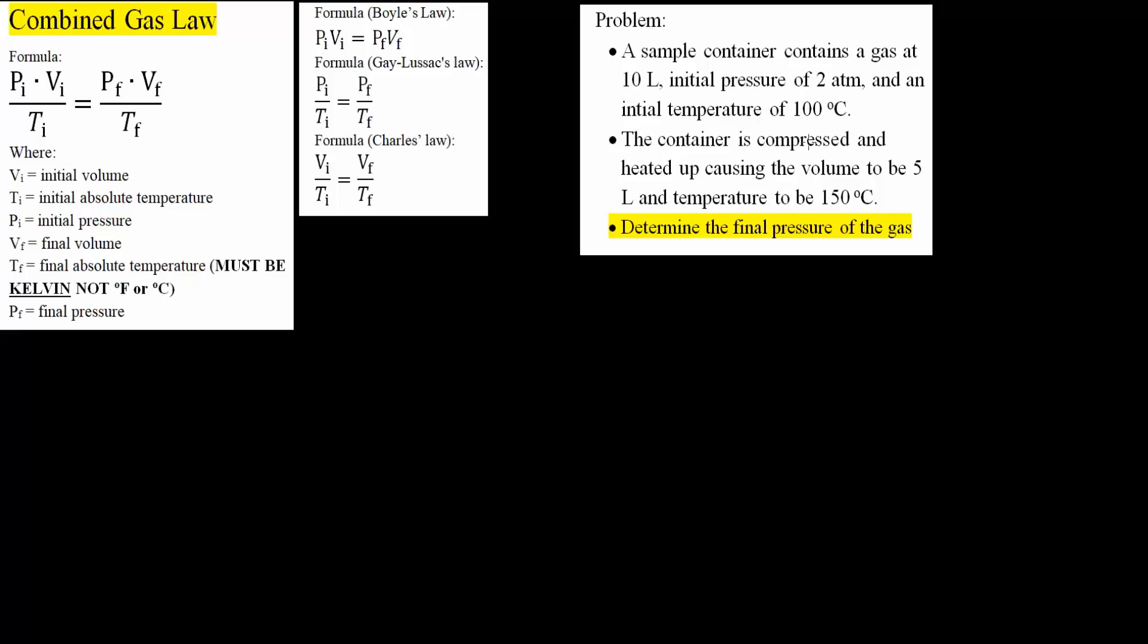The container is compressed, so the volume is going to decrease, and heated up, so temperature is going to increase, causing the volume to be 5 liters, and temperature to be 150 degrees Celsius. We want to determine final pressure of the gas.